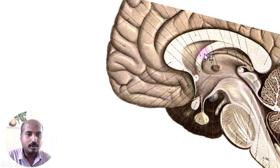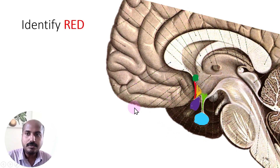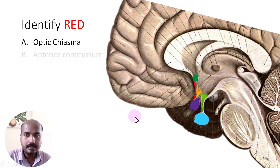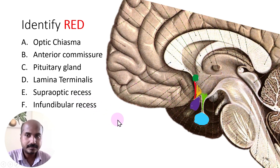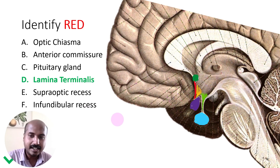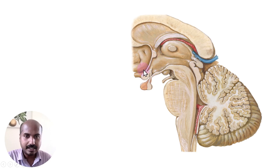Hello everyone, today we are going to learn about this area — this is a central part of the hemi-section of the brain. Let us have a look at these structures shaded green, purple, red, light blue, orange, and light green. I have a question for you: identify the red colored structure. Is it the optic chiasma, anterior commissure, pituitary gland, lamina terminalis, supraoptic recess, or infundibular recess? Yes, you are right — it is the lamina terminalis.